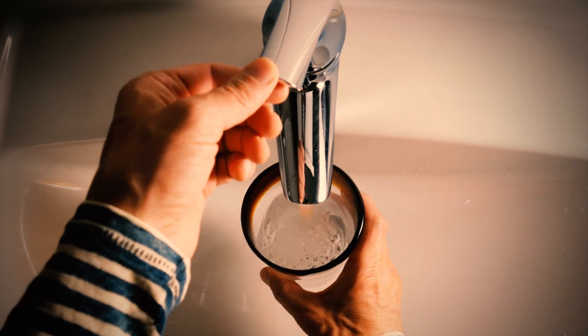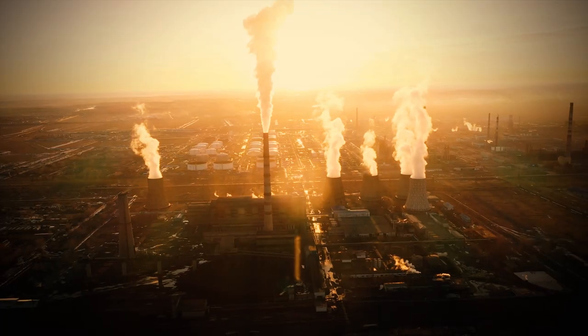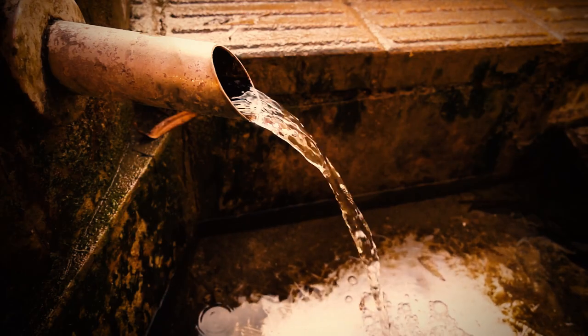Arsenic can be found in household tap water, either as a result of contamination from agricultural or industrial activities, or from being sourced from a private well.